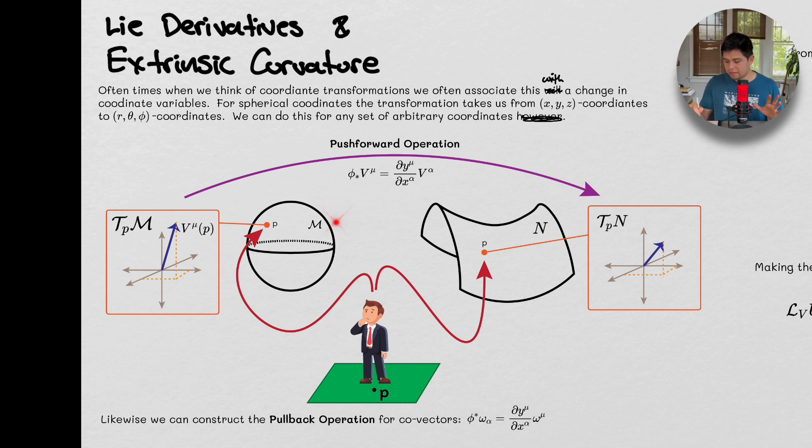So this guy standing at point P can be looking at spherical coordinates or negative curvature coordinates on these manifolds. But the point is that the underlying physics is going to stay the same. So how exactly do we transfer ourselves from one coordinate system to the other? Typically we've associated this with a simple coordinate transformation, but we can complicate things a little bit, and we'll see why it's necessary.